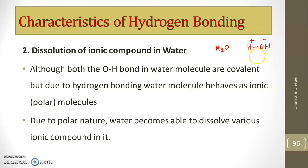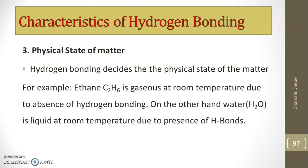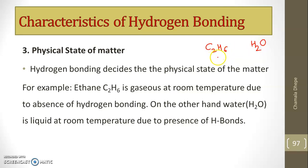The third characteristic is that hydrogen bonding decides the physical state of matter. Ethane (C₂H₆) is in the gaseous state at room temperature due to the absence of hydrogen bonding. On the other hand, water (H₂O) is liquid at room temperature due to the presence of hydrogen bonding. Ethane is a gas at room temperature, but H₂O is a liquid at room temperature because of hydrogen bonding.